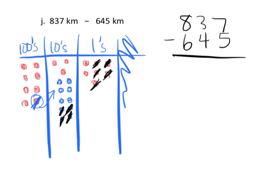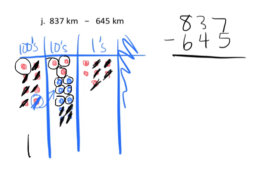Taking away 4 tens leaves us with 9 tens: 1, 2, 3, 4, 5, 6, 7, 8, 9. Looking at our hundreds, we now have 7 of them—no longer 8—and we need to take away 6: 1, 2, 3, 4, 5, 6. Our final answer is 1 hundred, 9 tens, and 2 ones, so the answer is 192.